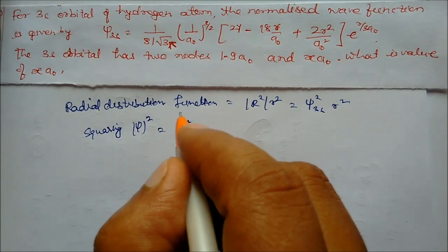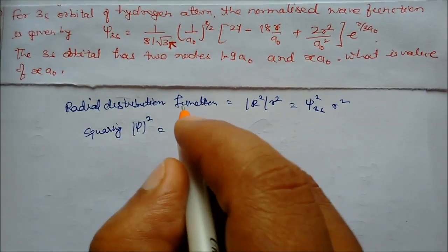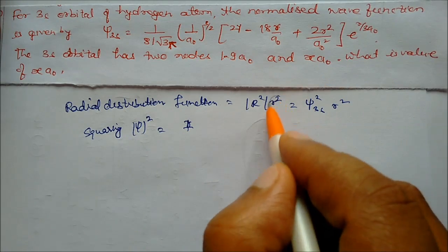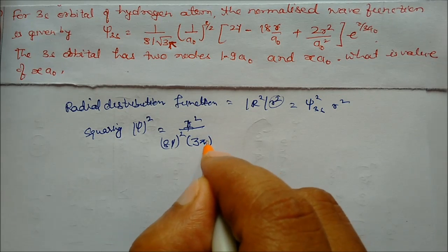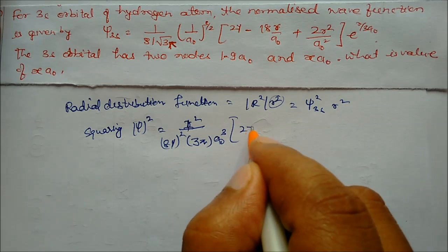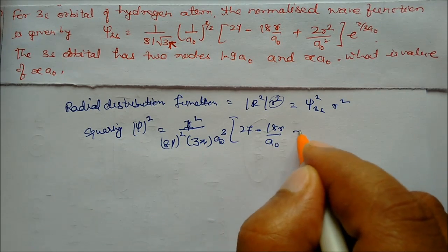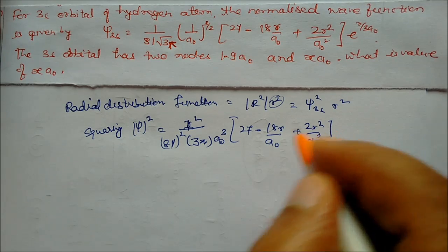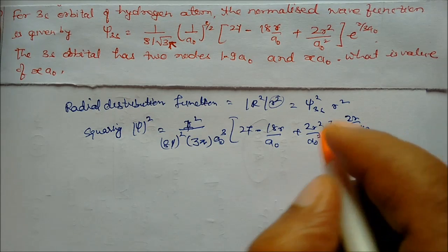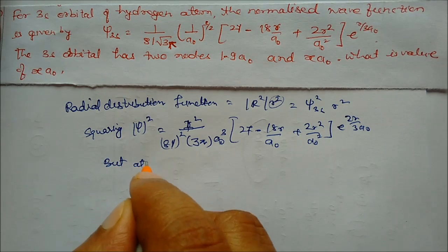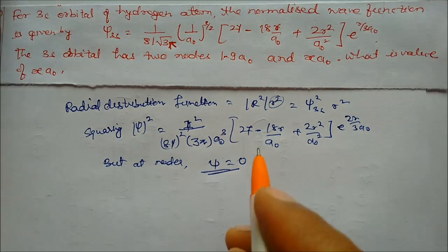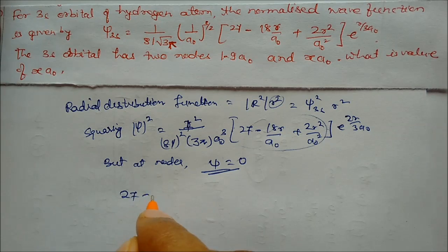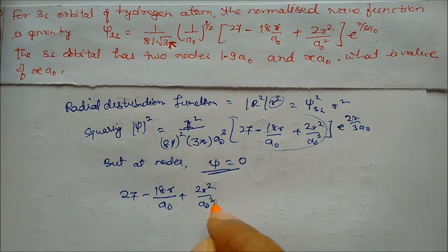On squaring, we get r² times (1/81)² · (1/3π) · (1/a₀)³ · (27 - 18r/a₀ + 2r²/a₀²)² · e^(-2r/3a₀) = 0. At the nodes, the whole expression is zero, so we need: 27 - 18r/a₀ + 2r²/a₀² = 0.